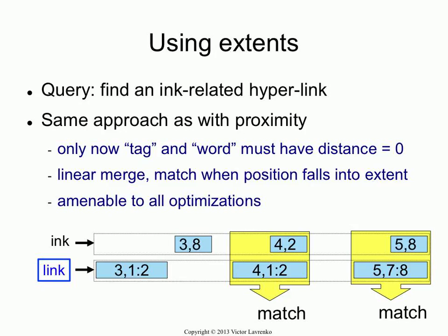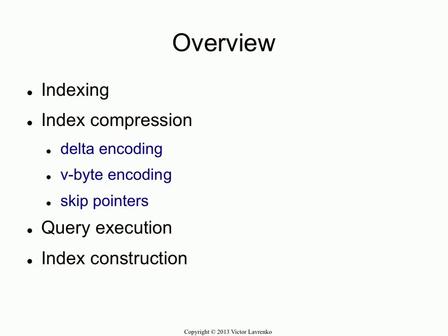So now you have a mechanism to index structure in the documents, whatever kind of structure you may want to index. Those are the three basic types of indices: you have normal inverted indices, you have positional indices which allow you to do phrases and near operators, and extent indices allow you to introduce structure into your database.